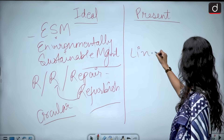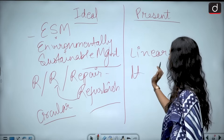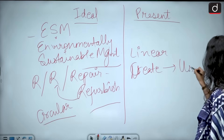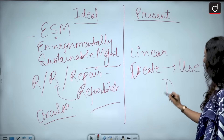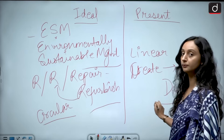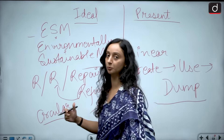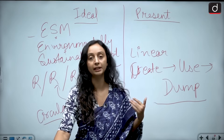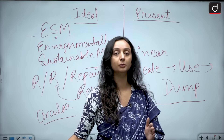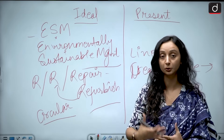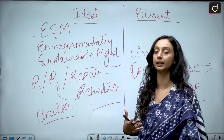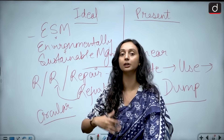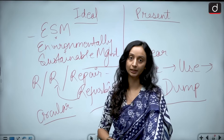But what is happening at the moment? It is linear. We create, use and finally dump. Right now we are following a linear way of disposal — we create, we use, and once it is done, we simply dump it away or scrap it off. Versus what should be happening: we should be in a circular setup where we first reduce, then reuse, and instead of scrapping, we repair, refurbish and reuse again. This is what should be happening ideally.